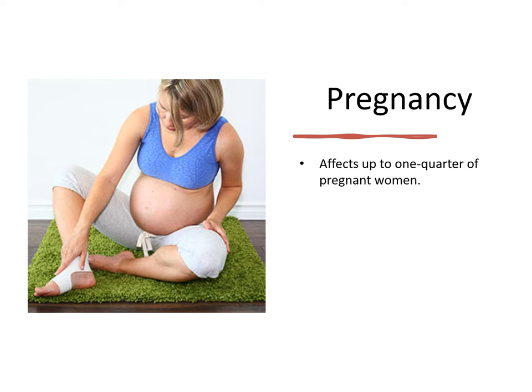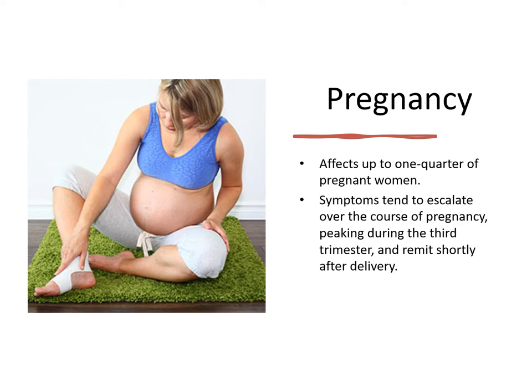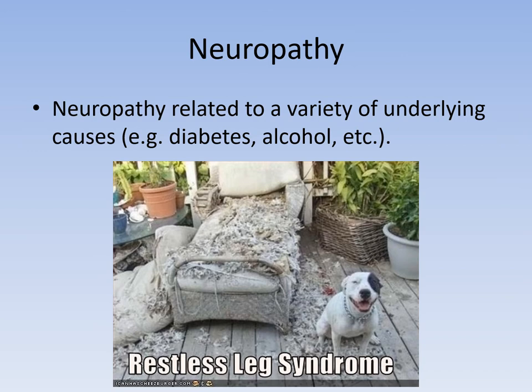Restless leg syndrome affects up to 25% of pregnant women. Symptoms tend to escalate over the course of the pregnancy, peak in the third trimester, and resolve shortly after delivery. Neuropathy related to a variety of underlying causes such as diabetes, alcohol, or radiculopathy has also been observed with increased frequency in patients presenting with restless leg syndrome, again suggesting the peripheral nervous system is involved.